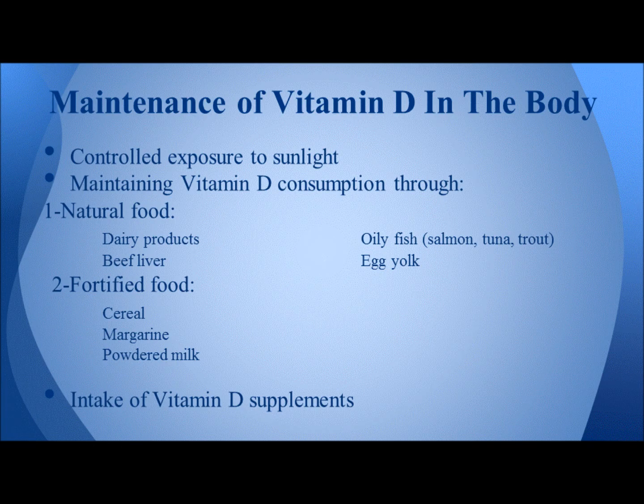Controlled exposure to sunlight is the most important factor for maintaining vitamin D in the body because it synthesizes it from the skin and converts it to its active form. We should be exposed to sunlight for about 10 to 15 minutes every day, preferably before 12 pm and after 3 pm to prevent sunburns.